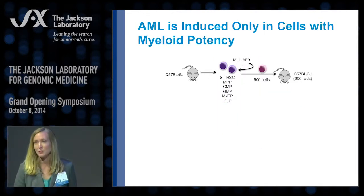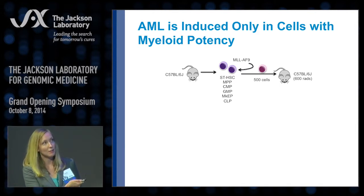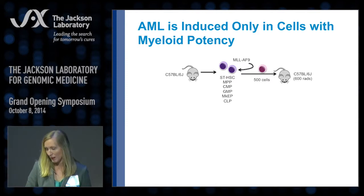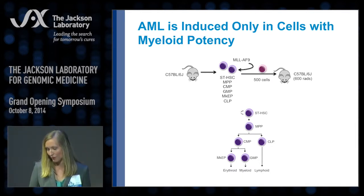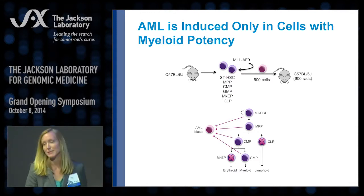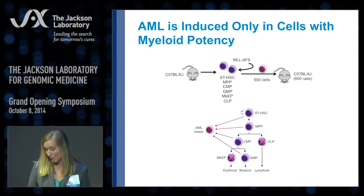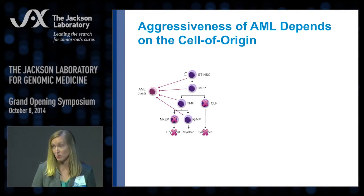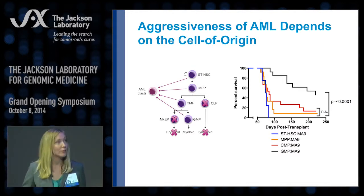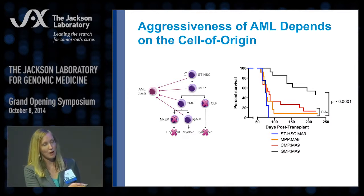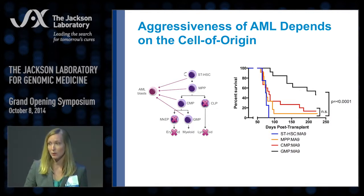When we induced MLLAF9 in these various populations and examined their ability to generate AML in vivo in mice, we found that only particular populations of cells are able to be transformed by MLLAF9 — those that already have de novo myeloid potential. Cells with restricted lymphoid or erythroid potential cannot be transformed by MLLAF9 to give rise to AML. Of the cell types that can be transformed, we found that leukemias derived from stem cells, shown in blue, have the shortest latency or most aggressive AML, whereas AMLs derived from committed progenitor cell types have a longer latency and are less aggressive.